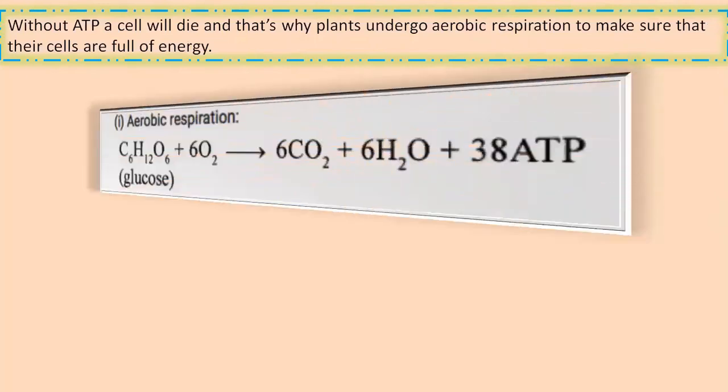Here's the equation for aerobic respiration. As you can see clearly, the glucose C6H12O6 when it gets combined with six molecules of oxygen leads to the production of six molecules of carbon dioxide plus six molecules of water plus 38 ATP molecules. That is, more energy is released.